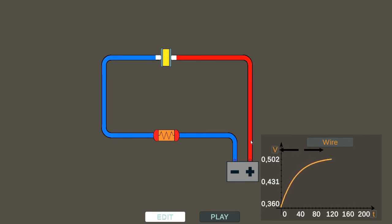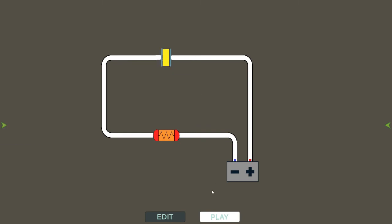If we modify the capacity value, for example to 50, we will see that the potential will arise faster.